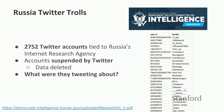Twitter immediately suspended these accounts, which removed the tweets and profile information from Twitter.com and the Twitter API. This meant journalists were not able to look at these tweets or accounts, to see what they were tweeting about — which of course made journalists much more interested to know what these accounts were doing.